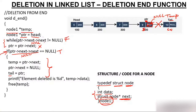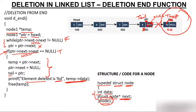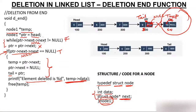Now tail must come back: tail = PTR, and PTR holds address 500, so tail moves to the node at 500. We print: 'element deleted is %d' using temp->data, which is 10, so the output will show 'deleted element = 10'. Then we call free(temp), which is a dynamic memory allocation function that destroys the memory, so this last node's memory gets destroyed.